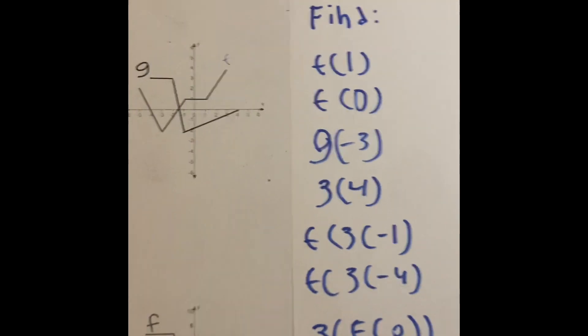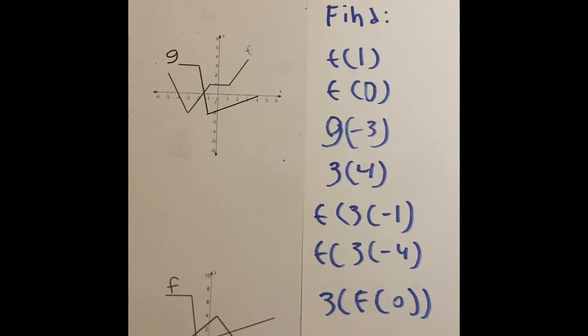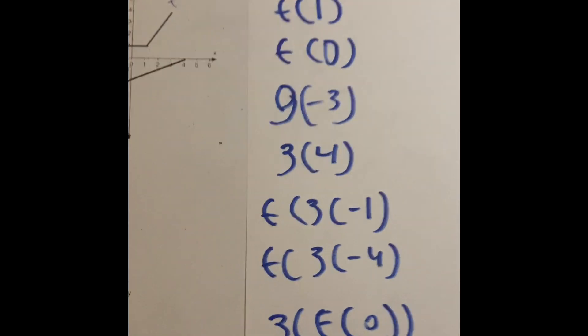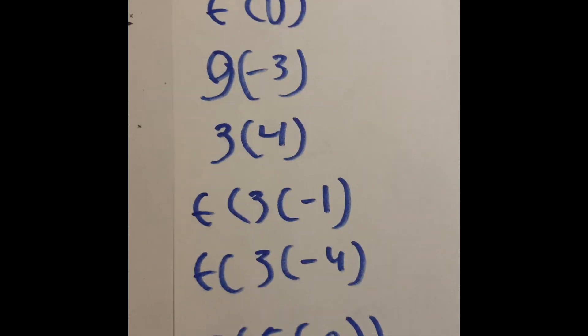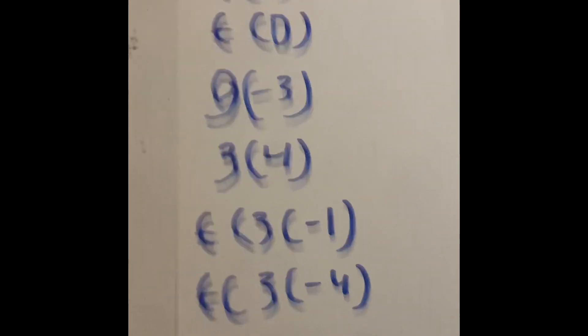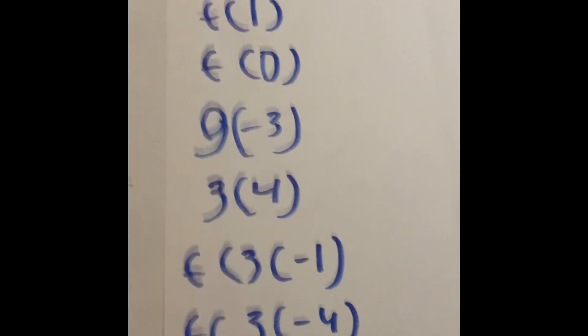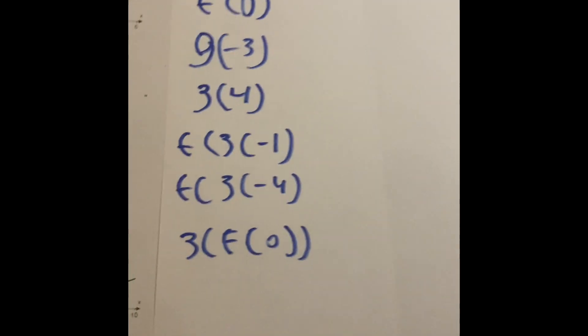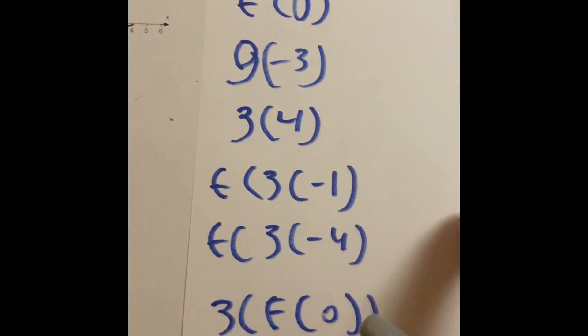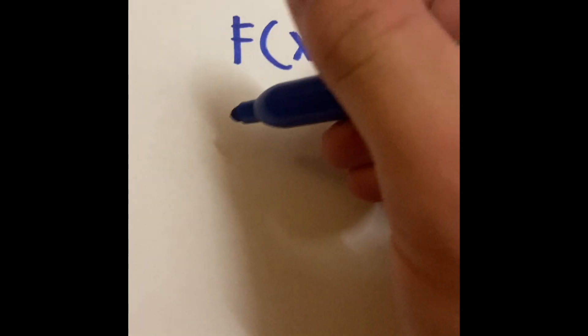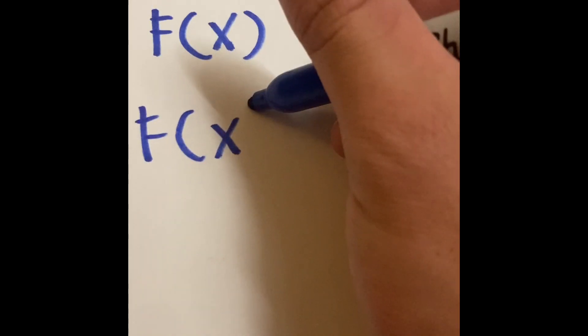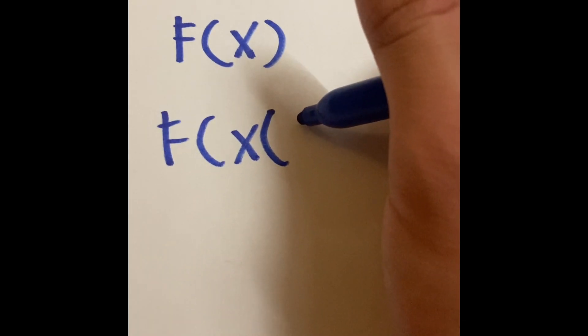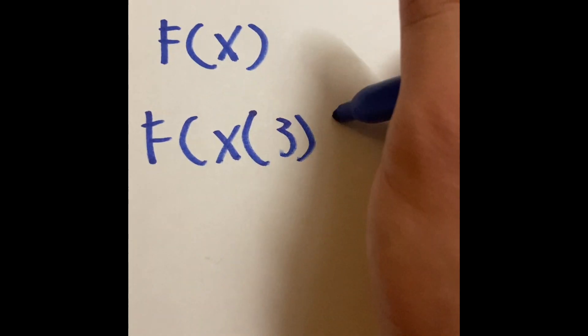To understand what's going on, you know how we say find the function of something? When you have something like this, we have to find the function of x. But also, if your problem has three things in it, then we're going to say the function of x of something, or the function of, let's say, three, for example.